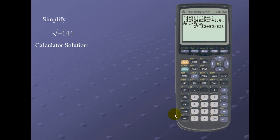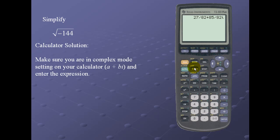Let's take a look at the calculator solution. Since I'm already in the correct mode, I simply enter the square root of -144, close off the parenthesis, for a result of 12i.